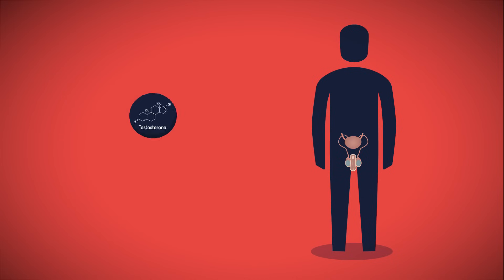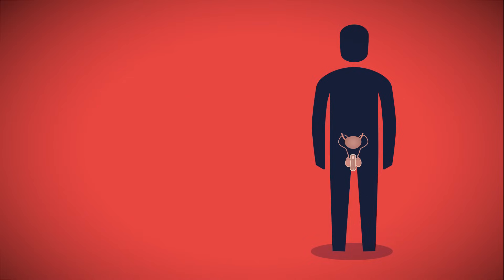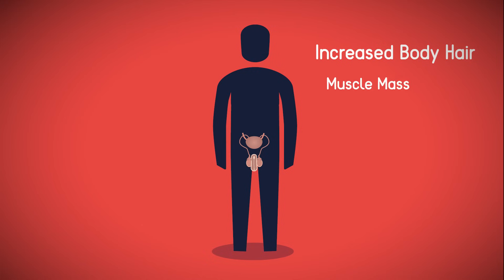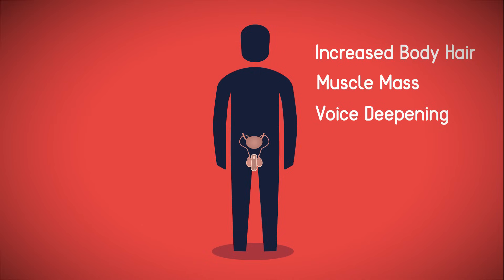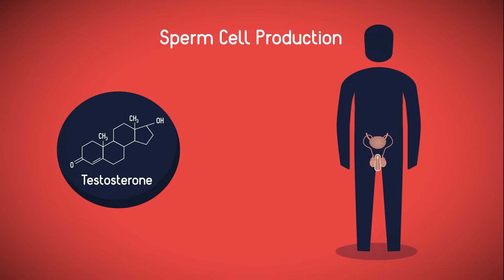In males, your testes secrete a hormone called testosterone, also known as the male hormone. Testosterone stimulates a wide variety of physiological changes, including increased body hair, especially on your face and in your armpits, more muscle mass, and your voice deepening. Testosterone also stimulates sperm cell production in your testes.